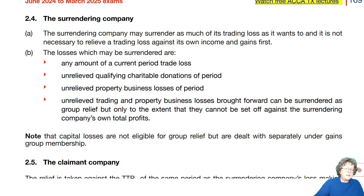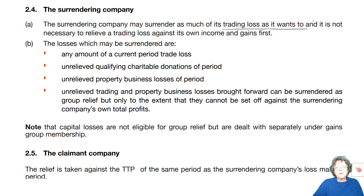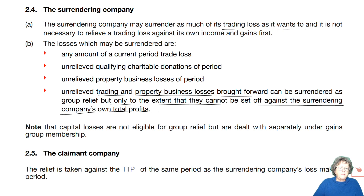The surrendering company may surrender as much of its loss as it wants to, and it's not necessary to relieve the loss against its own income and gains first. That's important specifically if the surrendering company has other income covered by QCDs or in the 19% band, whereas it's sending its loss to a company taxed at 25% or in the marginal rate. The losses which may be surrendered are: any amount of the current period trade loss, QCDs, property losses, and trade losses brought forward — only to the extent they cannot be set off against the surrendering company's own total profits.